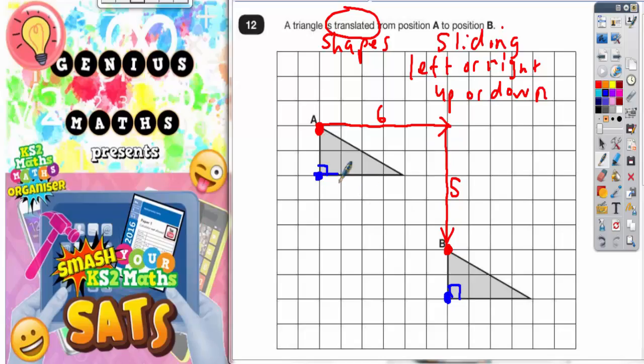Just double check. 1, 2, 3, 4, 5, 6 to the right. And 1, 2, 3, 4, 5 squares down. So that also works, 6 to the right and 5 down.